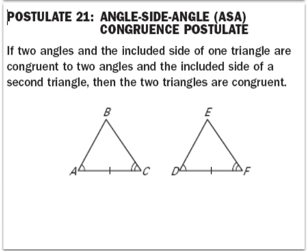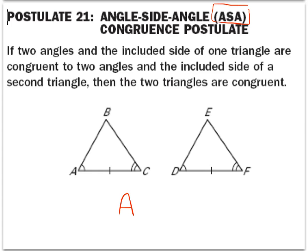The next postulate is called the angle-side-angle congruence postulate, abbreviated ASA. That implies that we need an angle, an included side in between, and then a following angle. Looking at the examples, we have angle A congruent to angle D, side AC congruent to DF, and then angle C congruent to angle F. So we have in both of these triangles an angle, a side, and an angle — it follows ASA, and we can say that these triangles are congruent.